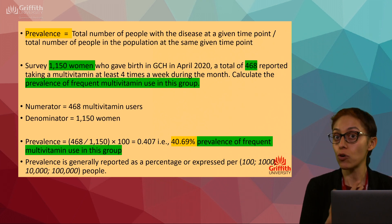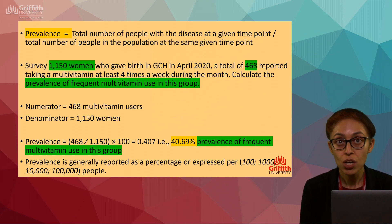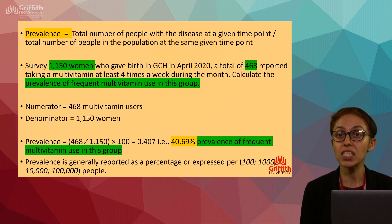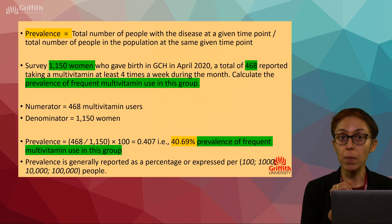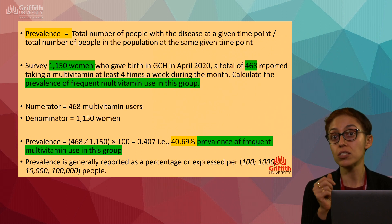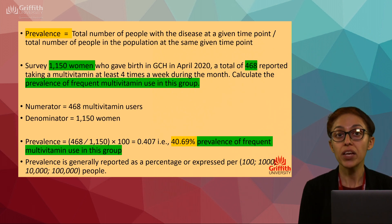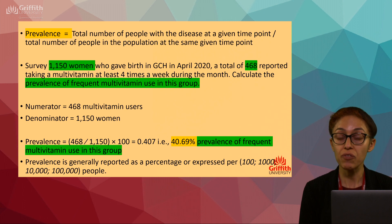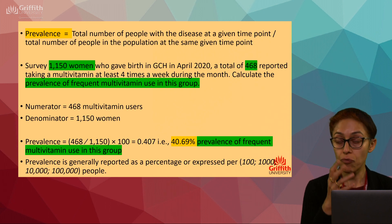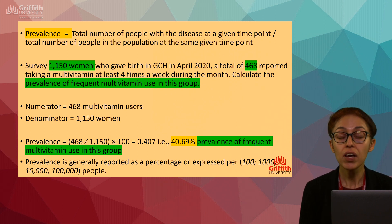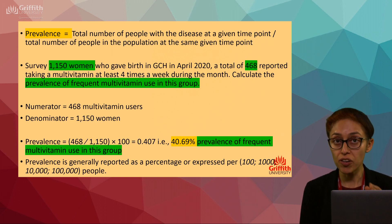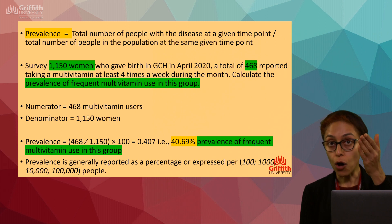Multiply by 100 to express it as a percentage. The answer is 40.69%. So the prevalence of frequent multivitamin users among women who gave birth at Gold Coast Hospital in April 2020 is approximately 40.69%.